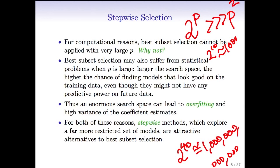Asked about practical limits: what would P be before you wouldn't want to use best subset? One instructor said maybe not beyond 10 or 20. The other said they wouldn't use it beyond a handful of predictors — probably not even for 10. The point is it's not always best to do a full search even when you can, because you pay a price in variance.